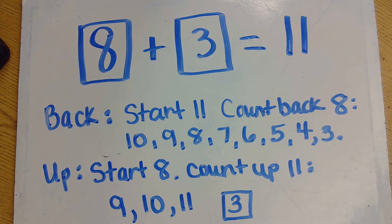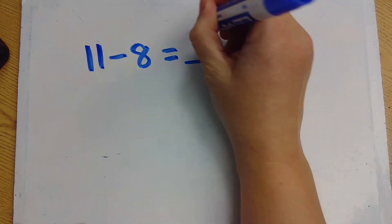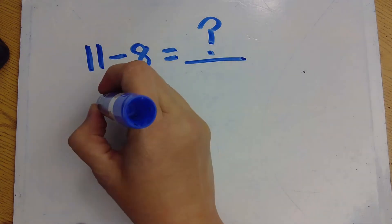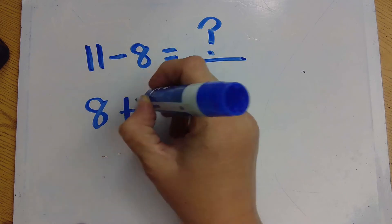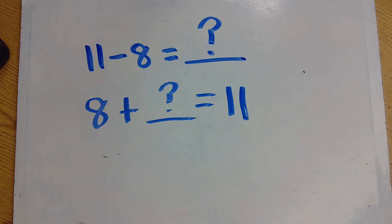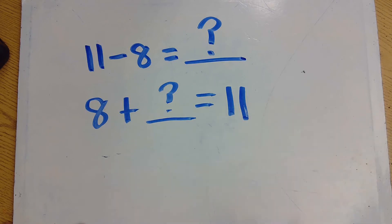You could have used either one of these strategies to help you figure out the answer. What number models can you write to represent this problem? Well, you could write 11 minus 8 equals blank — that would be the counting back strategy. Or you could write 8 plus what equals 11 — that would be the counting up strategy.